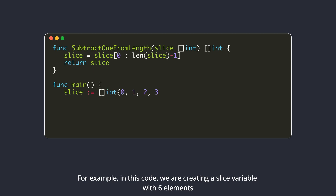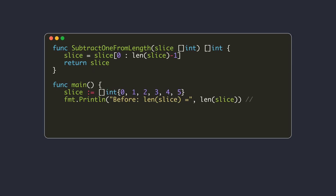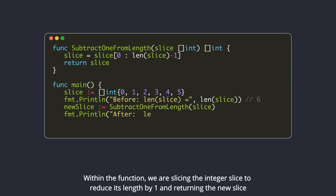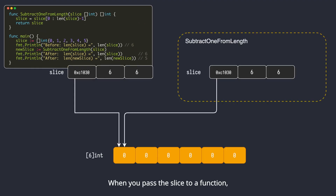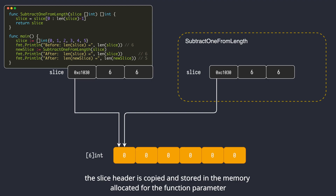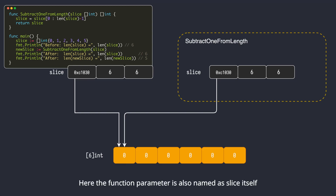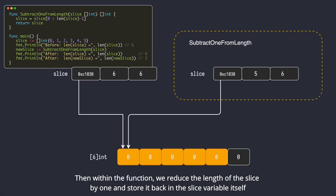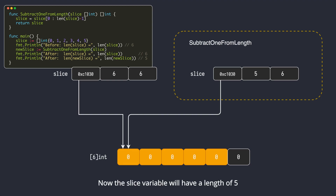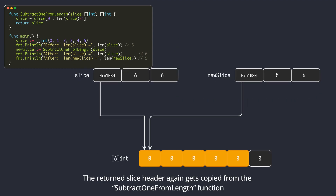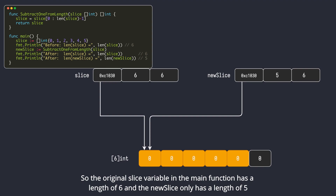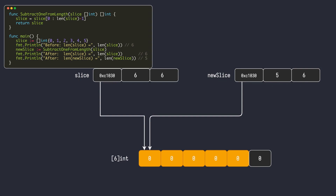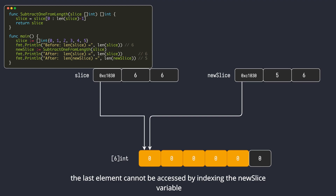Similar copying happens when you pass variables as function arguments. For example, in this code we create a slice variable with six elements and pass the slice to another function. Within the function, we slice the integer slice to reduce its length by one and return the new slice. However, in the main function, the length of the original slice variable remains unchanged. When you pass the slice to a function, the slice header is copied into the function parameter. Then within the function, we reduce the length by one and store it back. The returned slice header gets copied back and stored in the new slice variable in main. So the original slice has a length of six and the new slice has a length of five, even though they are pointing to the same underlying array — the last element cannot be accessed by indexing the new slice variable.